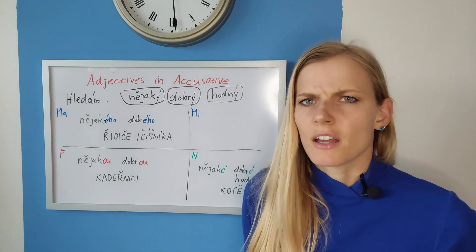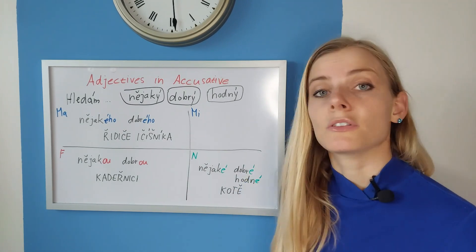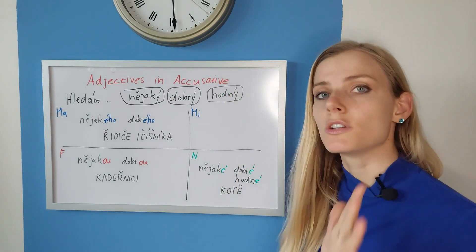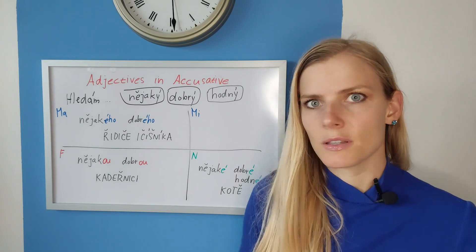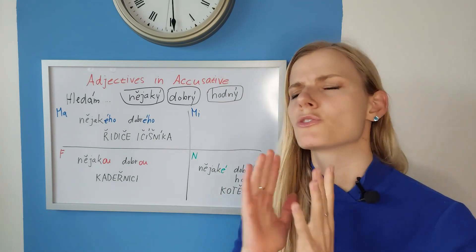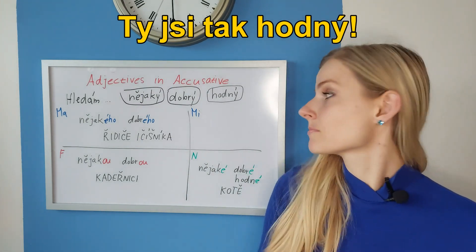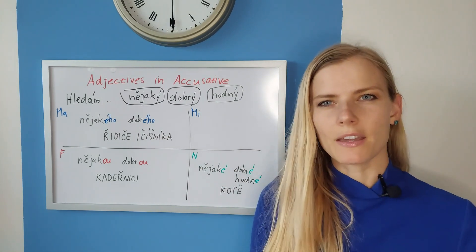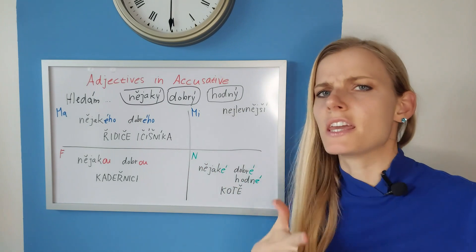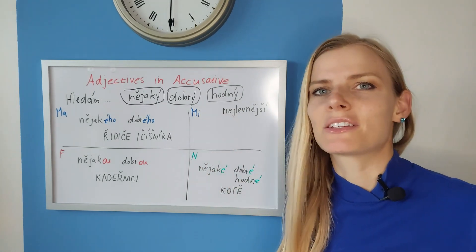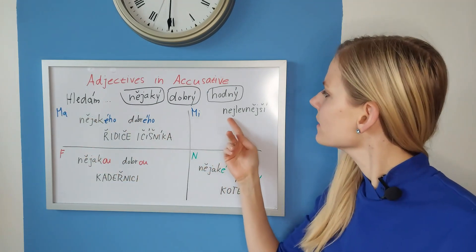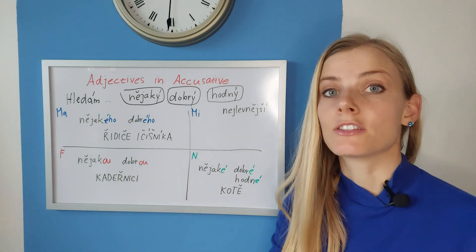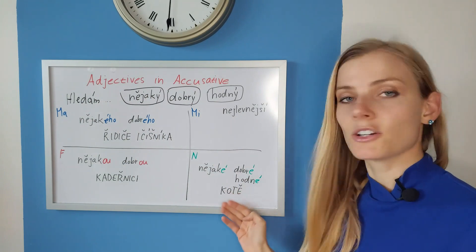Dobré kotě doesn't sound as natural here, so when talking about animals or people that are well-behaved, you would say hodný, hodná, hodné. It applies to people too — it means 'kind,' as in 'oh you're so kind': Ty jsi tak hodný. Remember, if we had another adjective ending in -í such as nejlevnější — 'the cheapest' — the same rules apply: Hledám nejlevnějšího řidiče, Hledám nejlevnější kadeřnici, Hledám nejlevnější kotě.